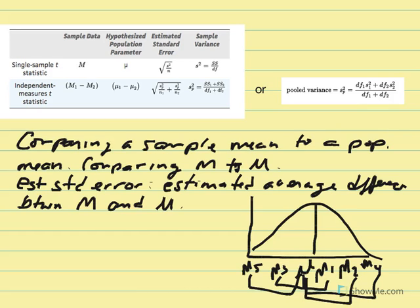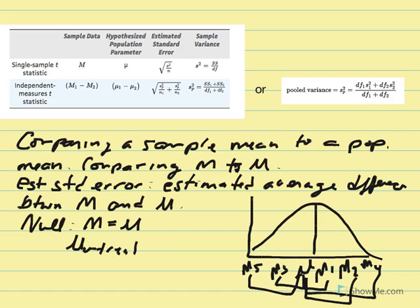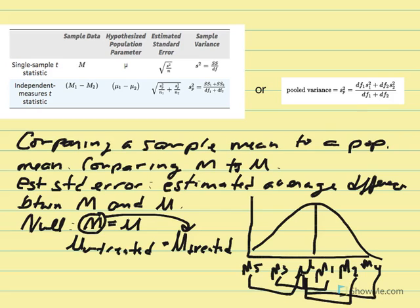We would have the center value representing the untreated population mean. We take the sample, expose them to treatment, and determine the difference. Theoretically, we can calculate on average what we'd expect those differences to equal if the null were true. The null states that m is equal to mu — that the untreated population will equal the mu for the treated. The null references the comparison between two populations and states they would be equal, with no difference between them.